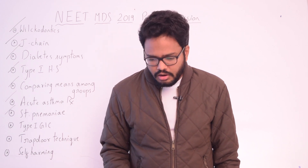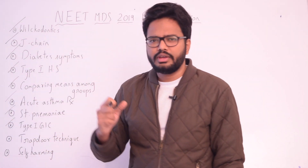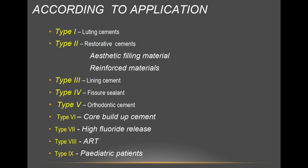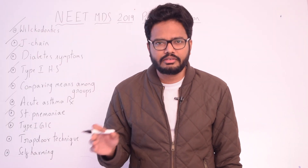Now coming to GIC classification based on clinical applications. Type 1 is for luting cements; Type 2 for restorations; Type 3 for liners and bases; Type 4 for fissure sealants; Type 5 for orthodontic cement; Type 6 for core buildup; Type 7 for fluoride releasing; Type 8 for ART — Atraumatic Restorative Technique; and Type 9 GIC for deciduous teeth.